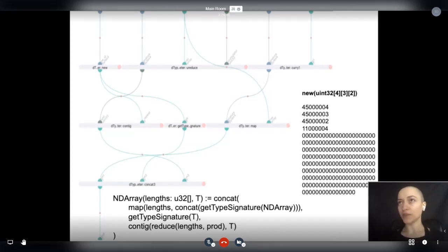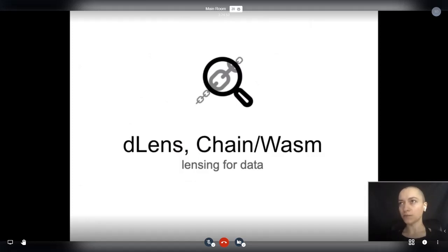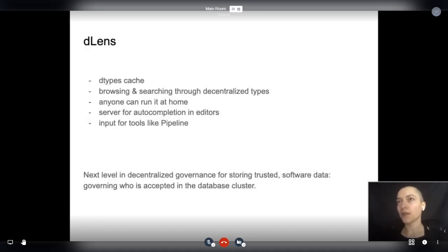I showed you dType, Taylor and Pipeline. What is the purpose of Lens? Lens is a browsable and searchable cache for on-chain types, and it will provide data for editor tools or input for tools like Pipeline. Anyone will be able to run it at home because the main data is on-chain. But as we well know, most people prefer trusted setups over running their own. I think the next level in providing good common software data is a system of decentralized governance where companies or individuals join database clusters.